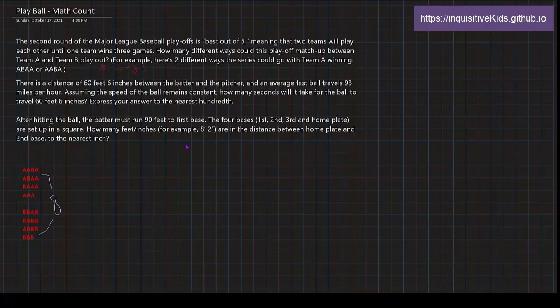Number two. There is a distance of 60 feet 6 inches between the batter and the pitcher. And an average fastball travels 93 miles per hour. Assuming the speed of the ball remains constant, how many seconds will it take for the ball to travel 60 feet 6 inches?